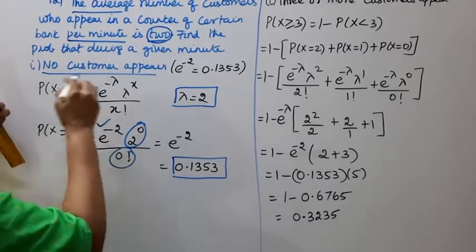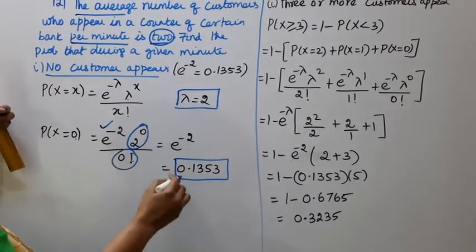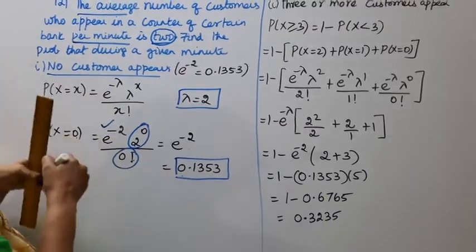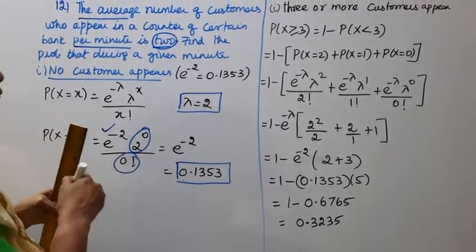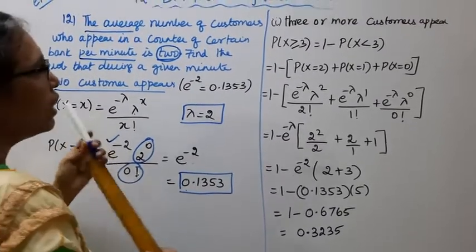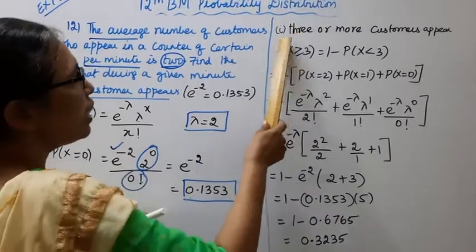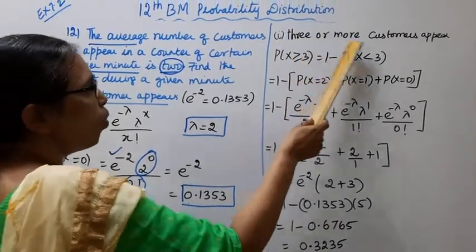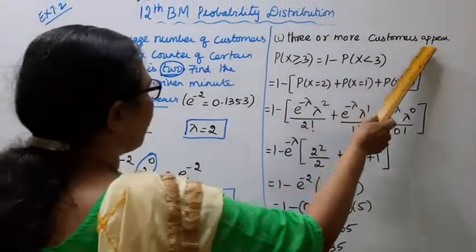So the probability that no customer appears is 0.1353. For the second part, we find the probability that 3 or more customers appear.